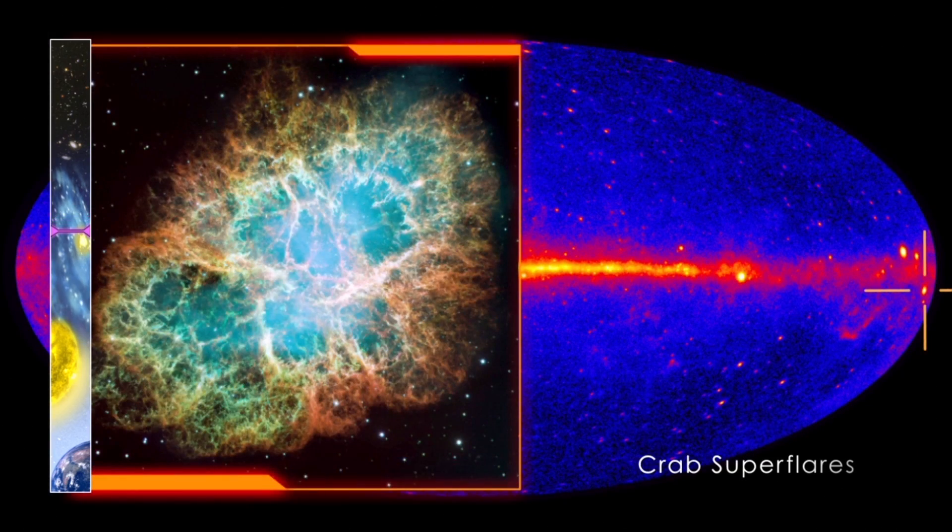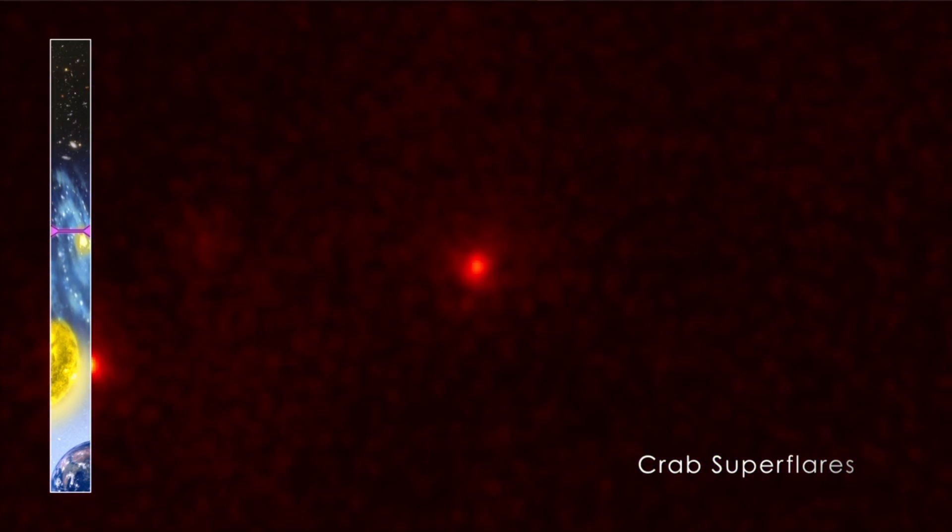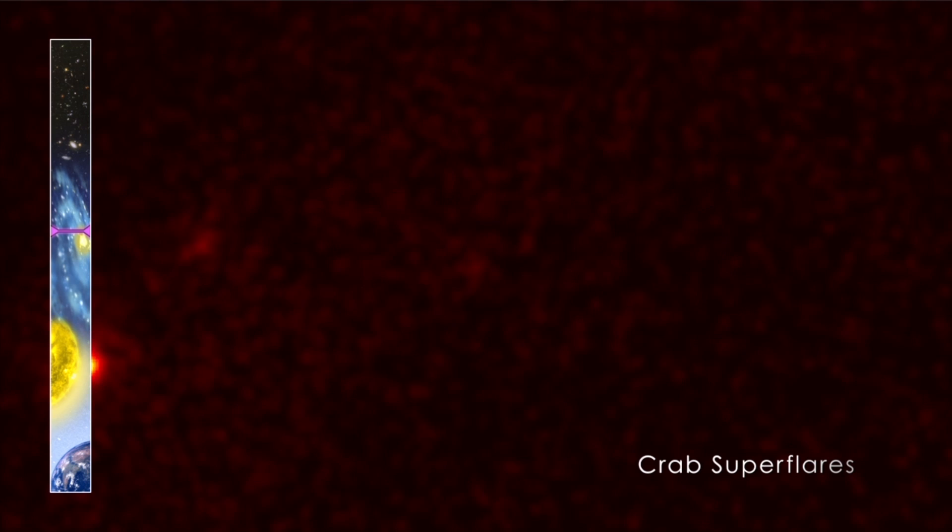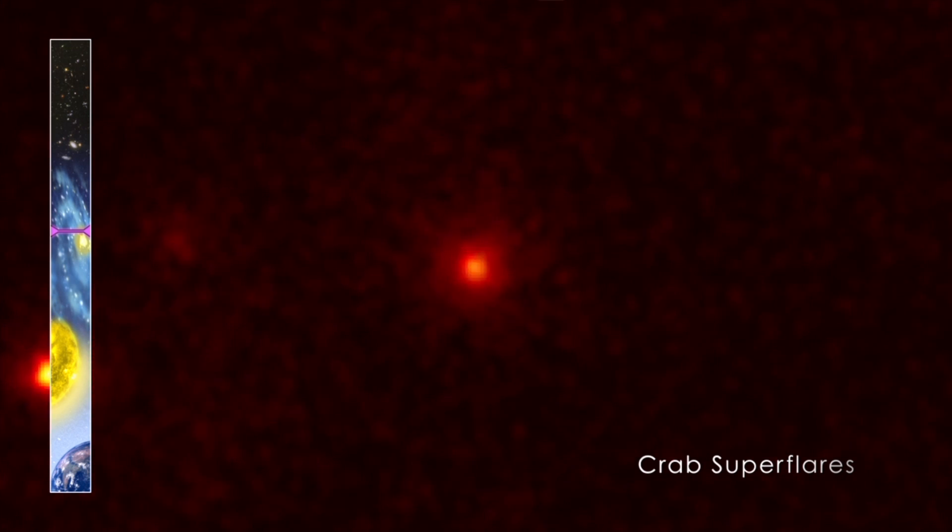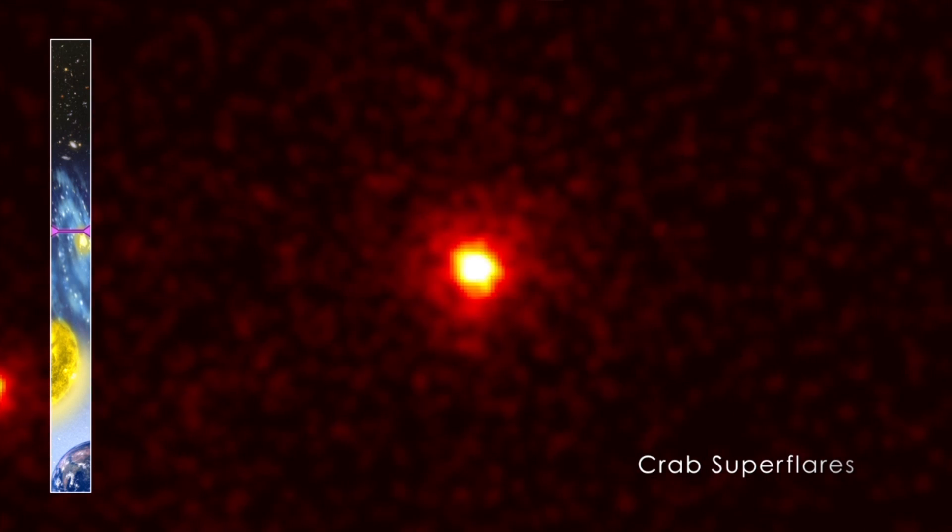Recently, astronomers have observed incredible flares in the nebula that theorists are hard-pressed to explain. The gamma rays most likely arise from electrons moving near the speed of light. But to account for these flares, the electrons must have the highest energies ever seen in cosmic sources.